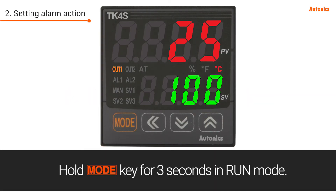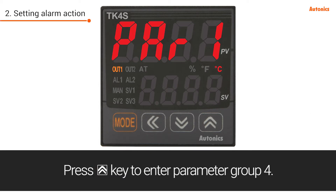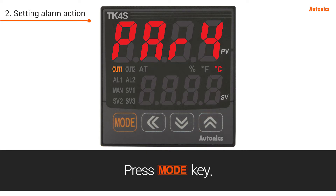Hold the Mode key for three seconds in Run Mode, then press the Up key to enter parameter group 4, and press the Mode key.